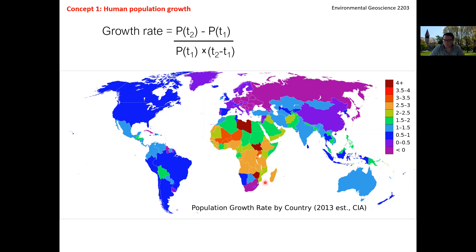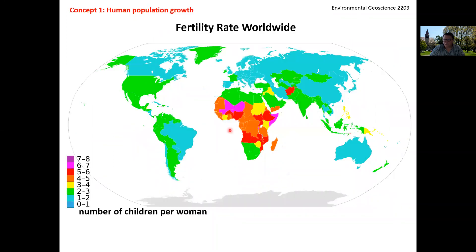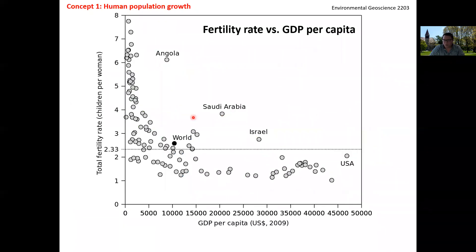Population growth is variable throughout the world, with large discrepancies particularly in what we used to call developing nations in Africa — now more appropriately called economically challenged or poor nations. A positive value like 0.1 means growth; a negative value means decline. This ties to fertility rate — the number of children per woman. Nations like the United States and much of the developed world are at roughly zero to two children per woman, while birth rates are much higher in the high-growth regions.